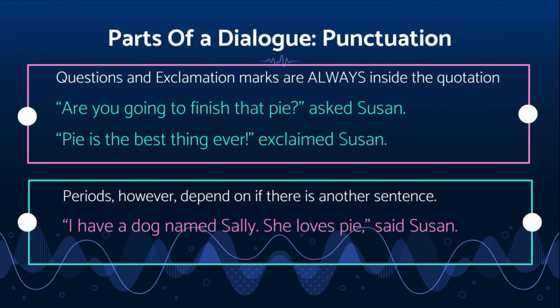Now moving on to question marks and exclamation marks. Question marks are always on the inside of the quotation. The reason for this is that if you put a question mark outside the quotation at the end, it's as if a character is questioning what another character told them — like they're explaining it but also questioning whether it's the actual thing. We're trying to make sure it's one specific character asking the question, which is why the question mark is inside the quotation at the end.